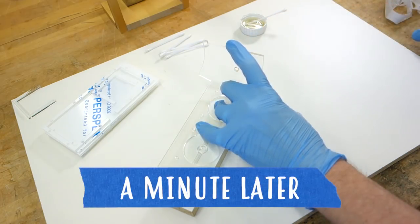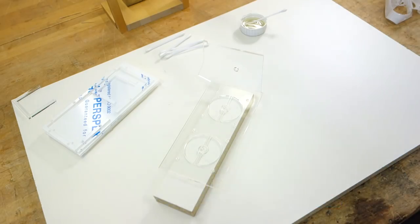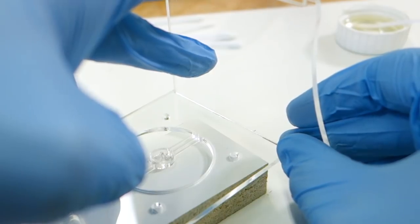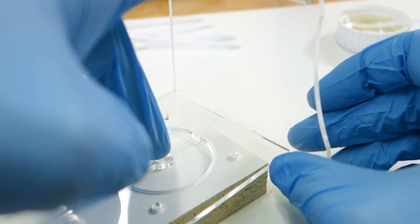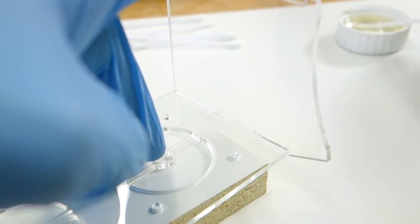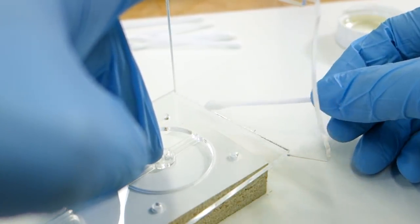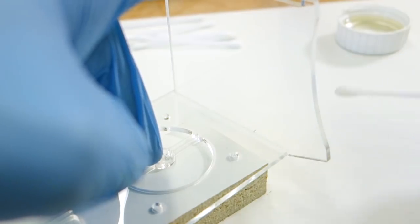I would not under any circumstances recommend using super glue to glue this. The glue basically sits in between the acrylic pieces, creating a brittle joint. The outgassing of the super glue when it dries can also leave hazy remnants on the acrylic plastic.